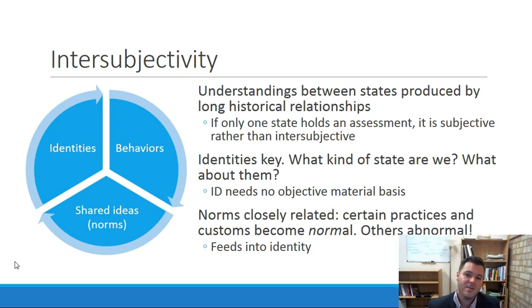So constructivists are going to agree with a lot of other international relations theorists that things like anarchy are important. They're going to say that anarchy and sovereignty and such these are norms. They're not natural laws. They're not inevitable. They're not unavoidable. They are in fact things that we can influence. And so constructivists are going to allow for a lot more flexibility.